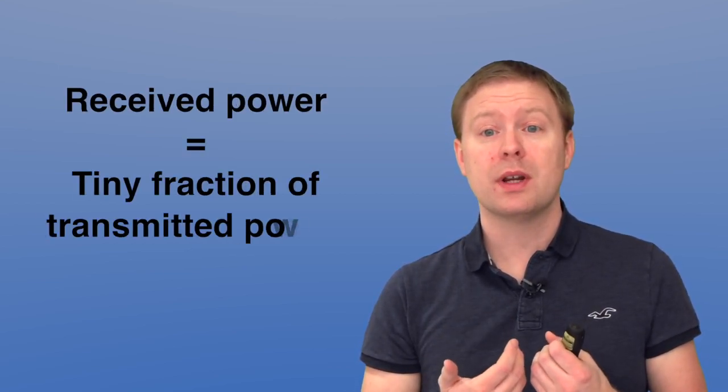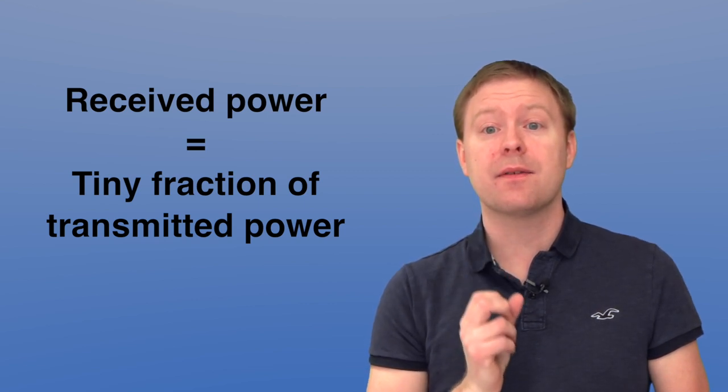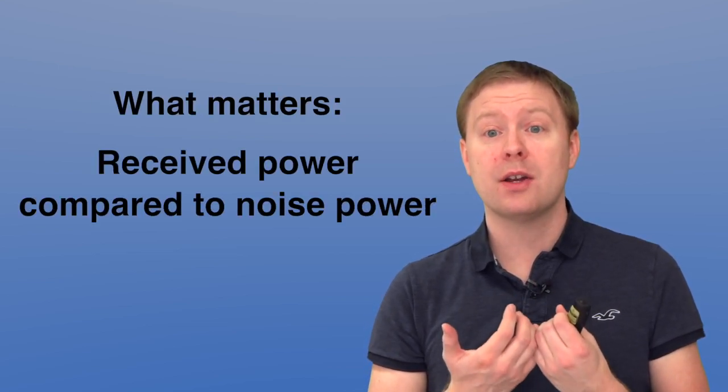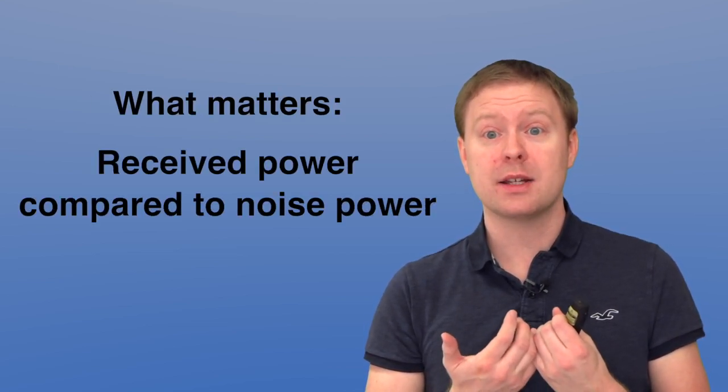The channel gain is apparently very very small, and that means that we are only receiving a tiny fraction of the power that we transmitted. Still the communication systems are obviously working because we have many operational wireless systems. So how is that possible? Well it doesn't matter exactly what the absolute power level of the received signal is but how large it is compared to the noise, and that is where the signal to noise ratio plays its important role.